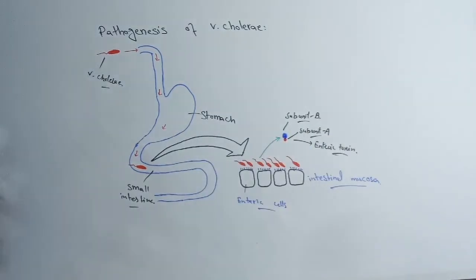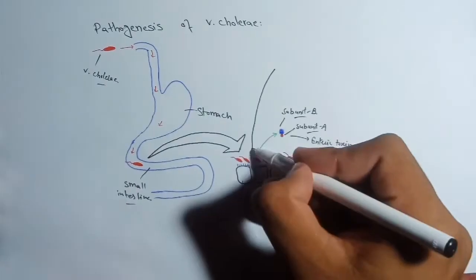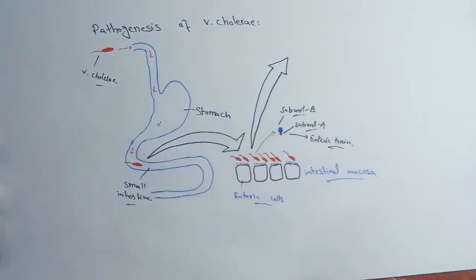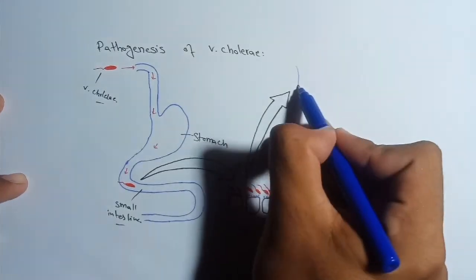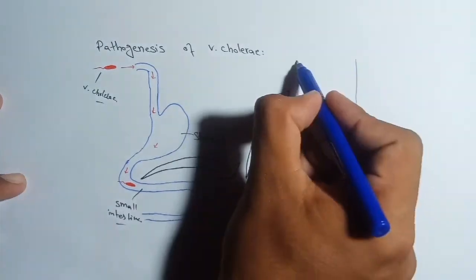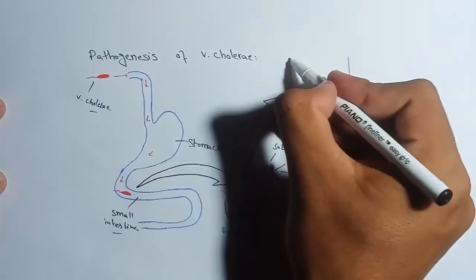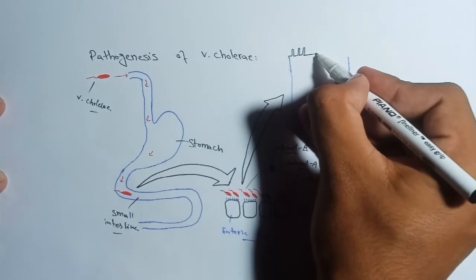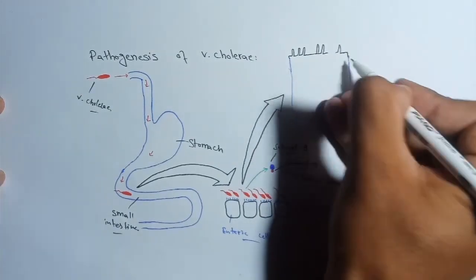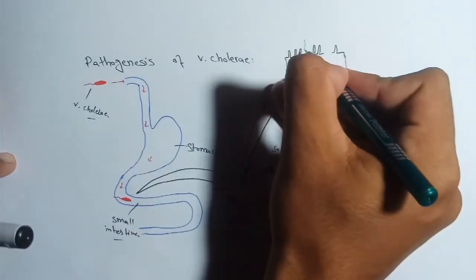Actually, V. cholerae doesn't enter the enteric cell, but its toxins do. Its toxins are also called enterotoxin, having two subunits—subunit A and subunit B. But out of these two subunits, only subunit A moves into the enteric cell.